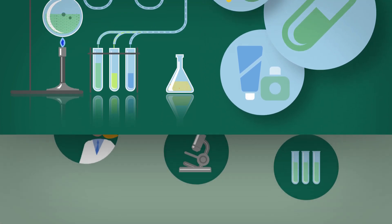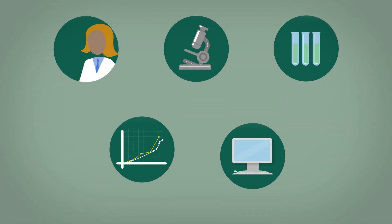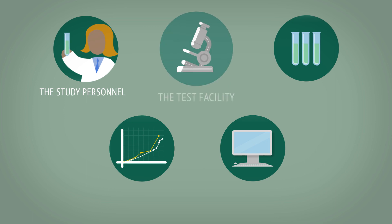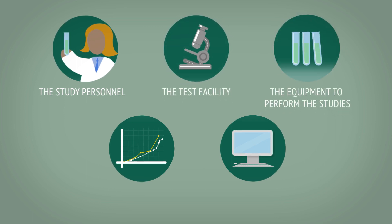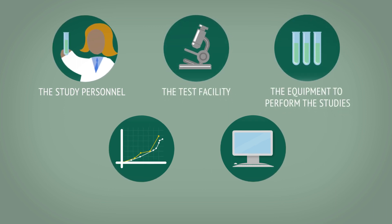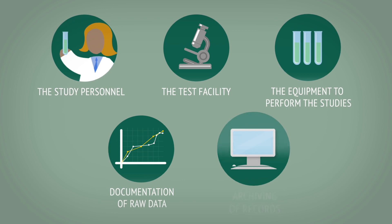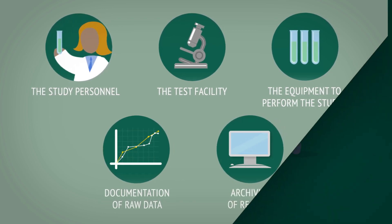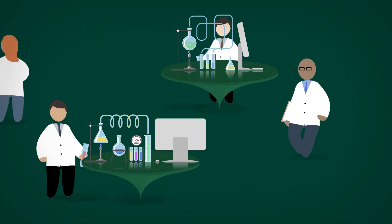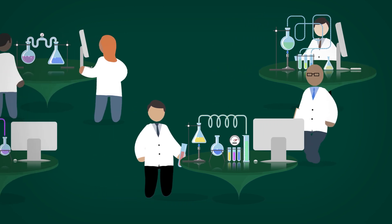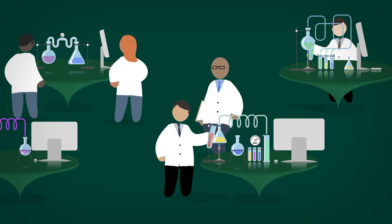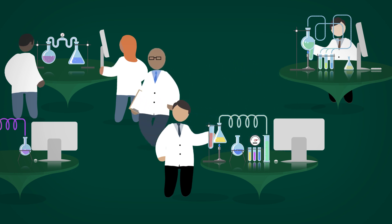GLP covers every step of the testing process, including the study personnel, the test facility, the equipment to perform the studies, documentation of raw data and archiving of records. The testing is either performed in-house by the company bringing forward an innovation or contracted to an outside research organization that specializes in conducting studies to support regulatory submissions.